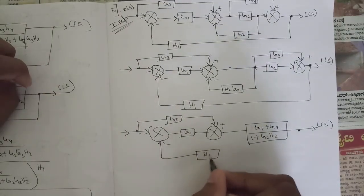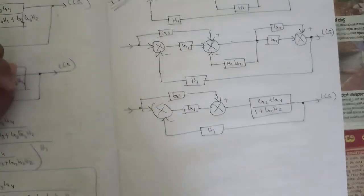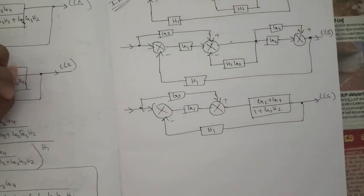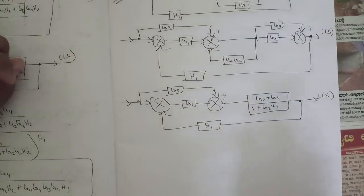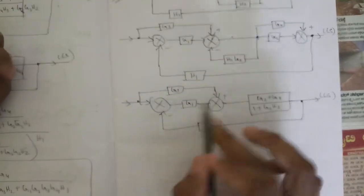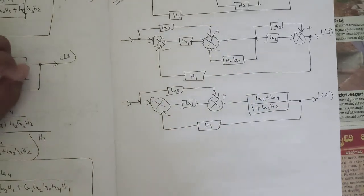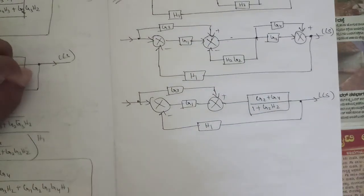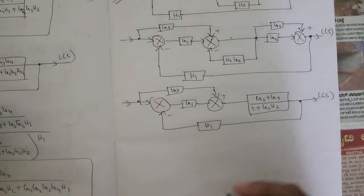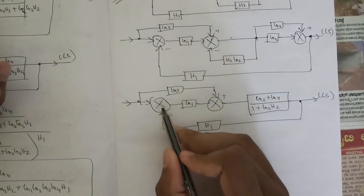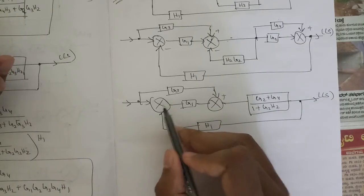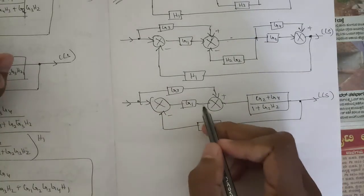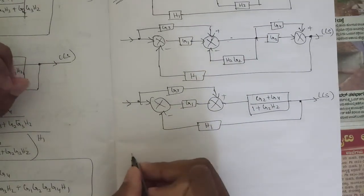Now we have H1. We need to apply the rule for shifting a summing point ahead of — that is, to the right side of — the block. When we shift a summing point to the right side, the rule is we multiply by G. I told you that shifting of a summing point and a takeoff point are the reverse processes of each other: if you shift a takeoff point to the right of the block, multiply by 1/G1; if you shift the summing point to the right, multiply by G1.